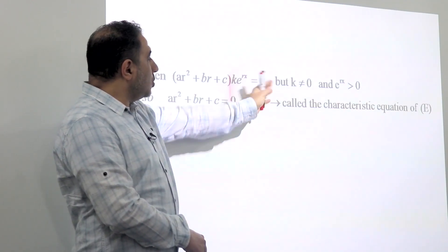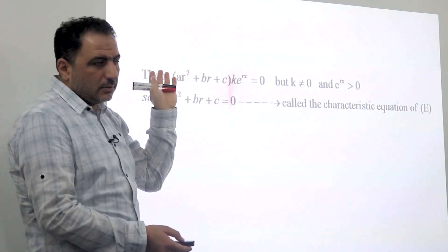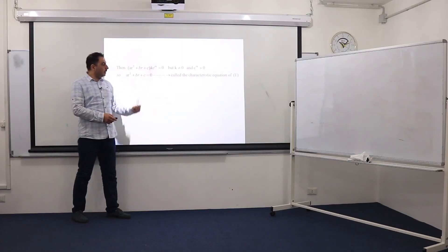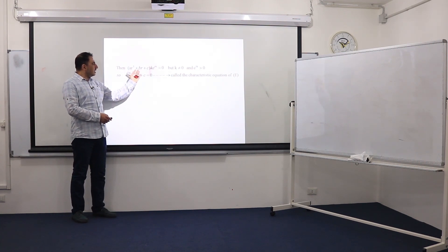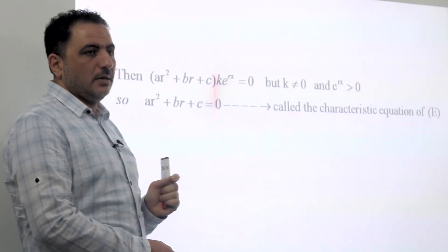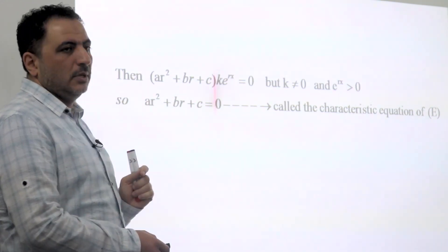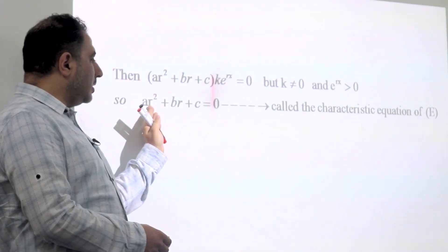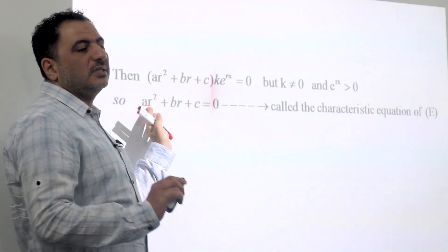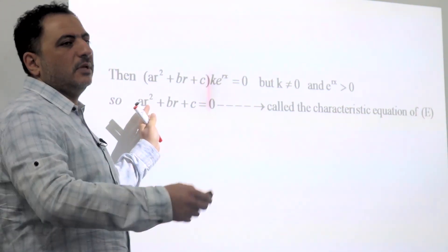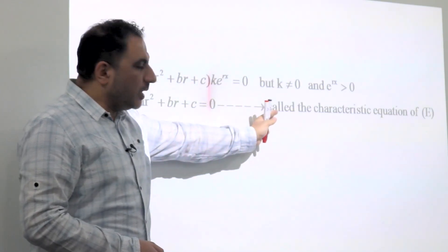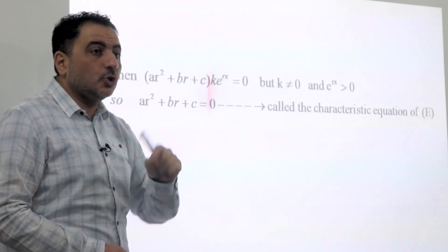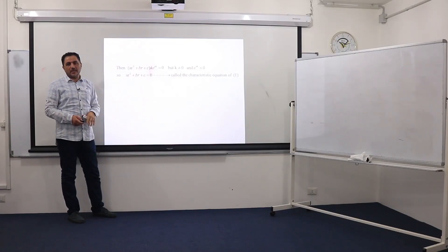We obtain: ar² + br + c, multiplied by ke^(rx). We know that k is any nonzero constant, and e^(rx) is always positive. So the only factor that could equal zero is ar² + br + c. This is a second-degree equation in the variable r, and we deal with the set of complex numbers — so delta can be positive, zero, or negative. This equation is called the characteristic equation, and it is an essential part of the solution.